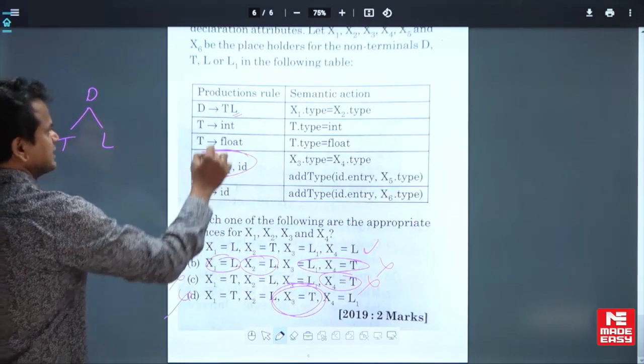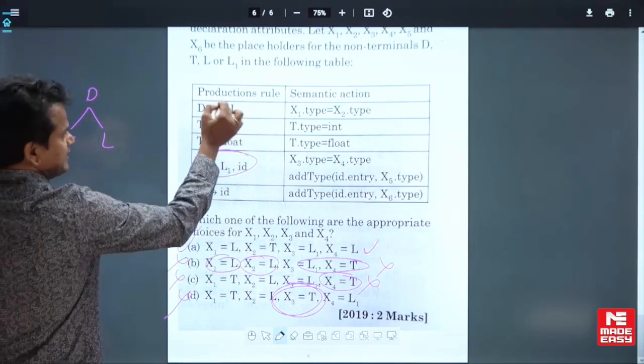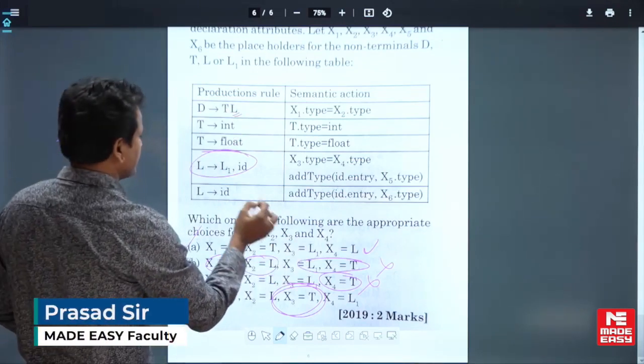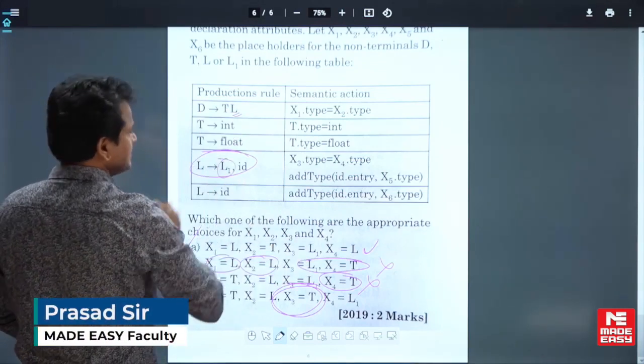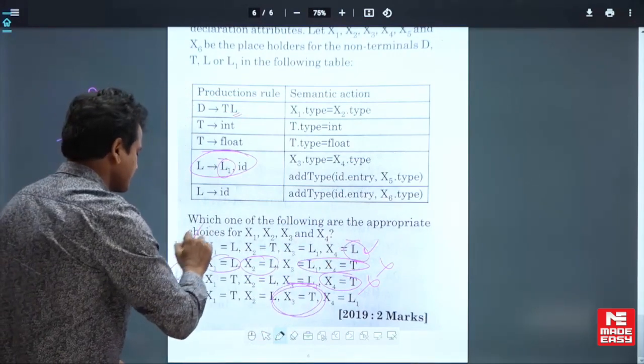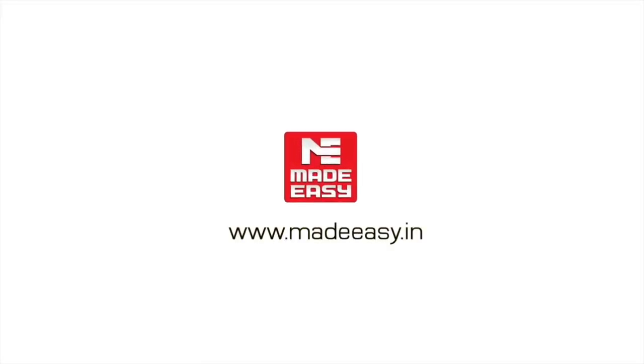Then A: x1 equal to L and x2 equal to T. Yes, we are finding the L value from its sibling, it can be. And x3 equal to L1, finding the child value from the parent, yes. So this is the right answer for this question. Thank you.